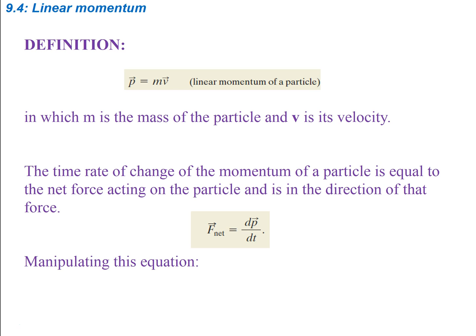Basically we're going to look at how hard it is to change the motion of an object. We're going to use the letter P, either capital or lowercase, for momentum, and that's going to be equal to mass times the velocity of an object. So the more massive an object is, the more momentum it's going to have. The faster the velocity, the more momentum it's going to have.